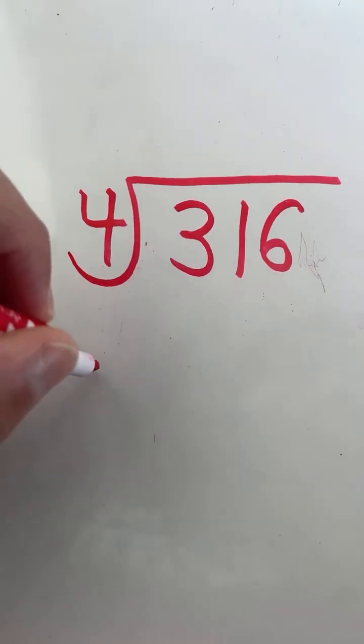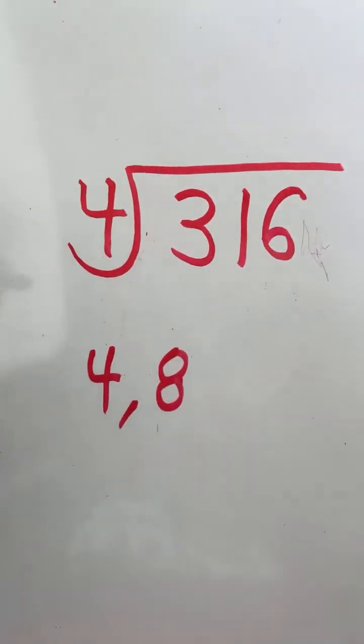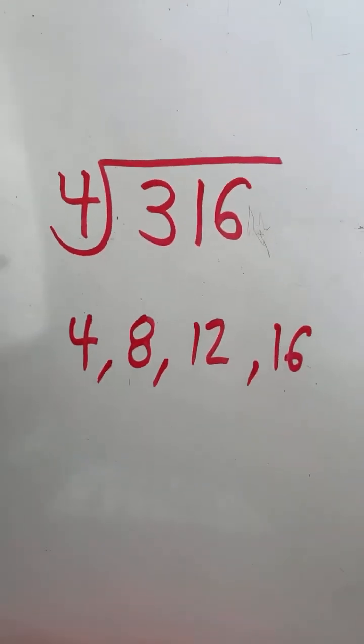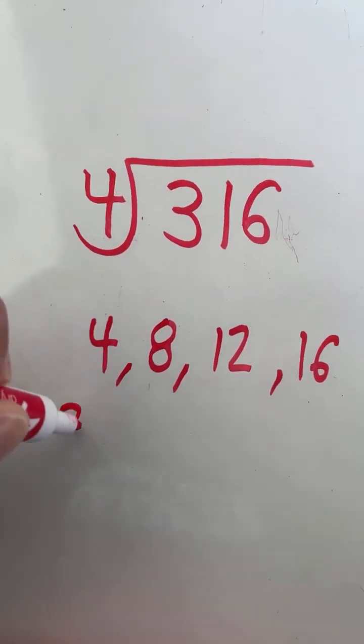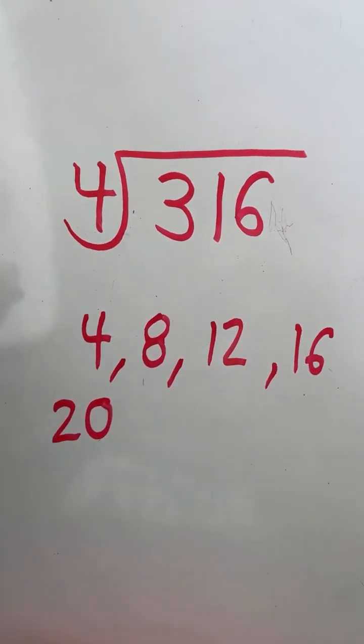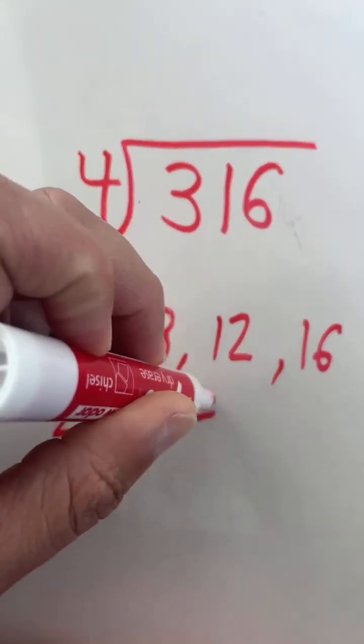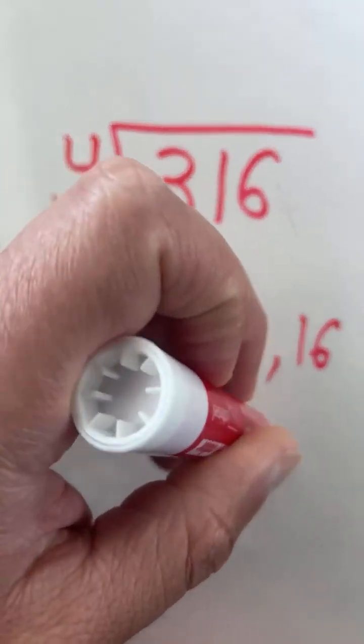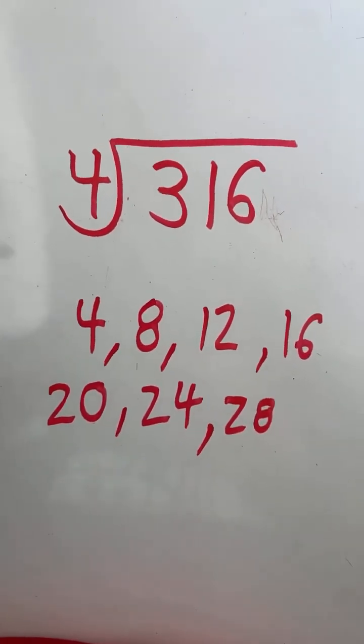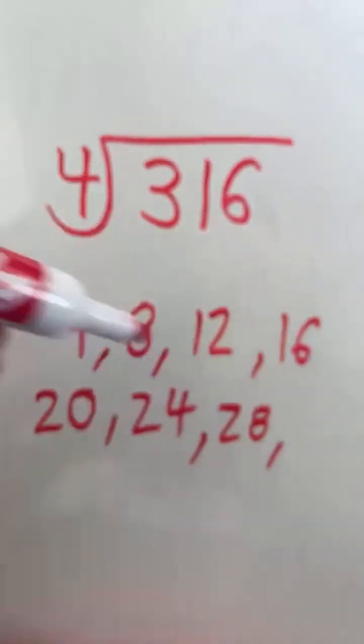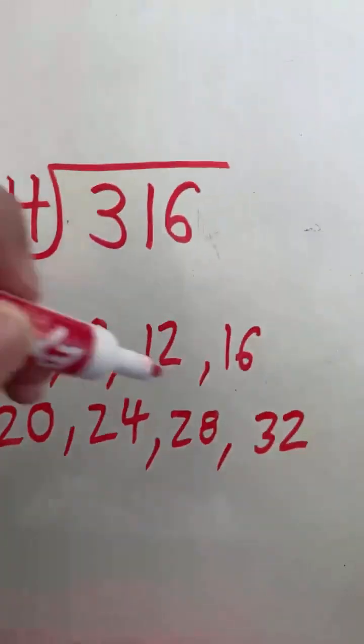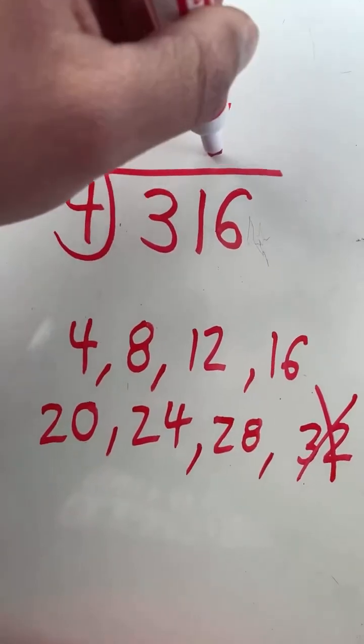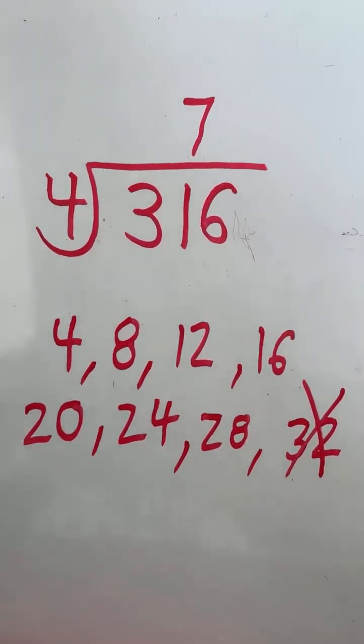What we're going to do is count by 4s: 4, 8 (that's 2 groups of 4), 12 (3 groups), 16 (4 groups), 20 (5 groups), 24 (6 groups), 28 (that's 7 groups of 4). Now if I count by 4 again, I'll be past the number 31. I'll be at 32, and 32 is too far. But we were able to get 7 full groups of 4 within 31.